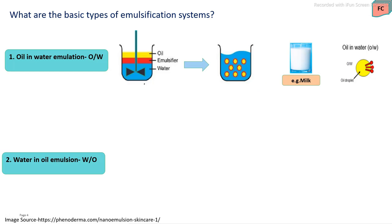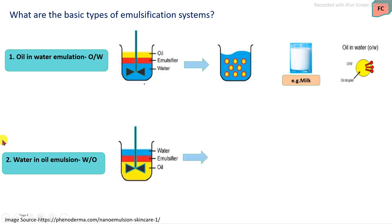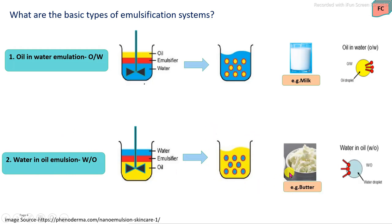The second type of emulsification system is the water-in-oil emulsion system, in which water is dispersed into the oil, resulting in an emulsion. For example, butter, which contains a higher percentage of fat that is in the continuous phase and water which is in the dispersed phase. These are the two main types of emulsification systems in the food processing industry.